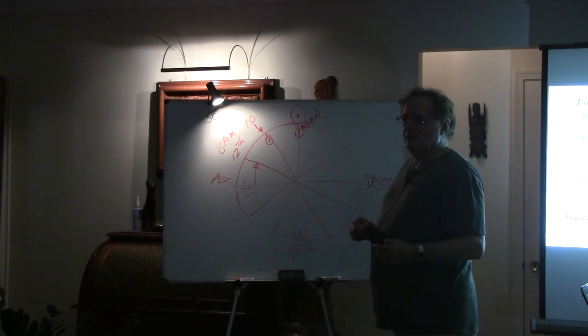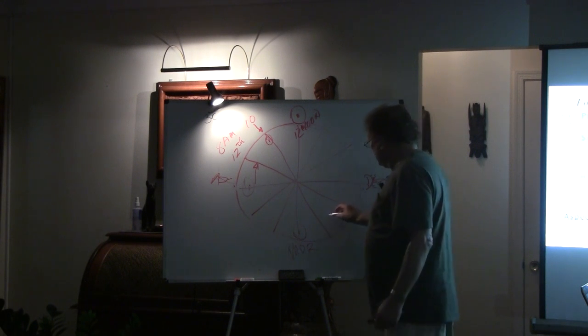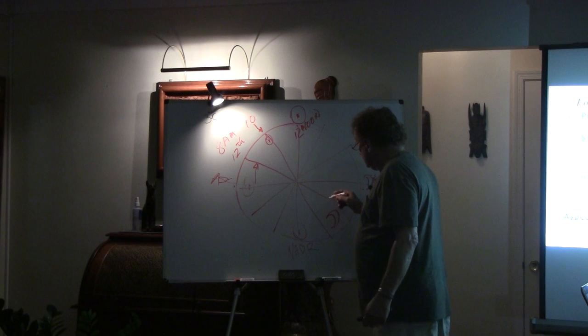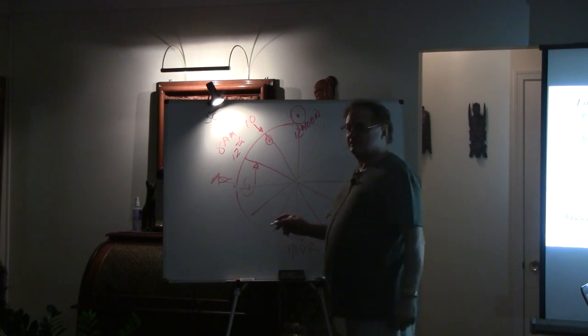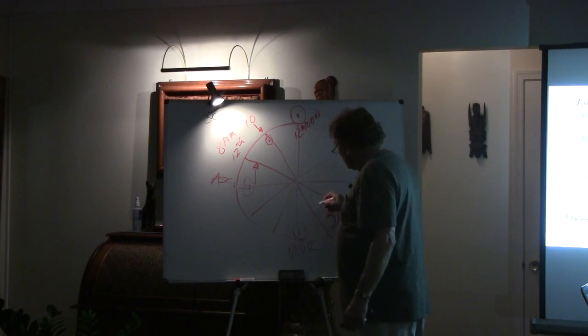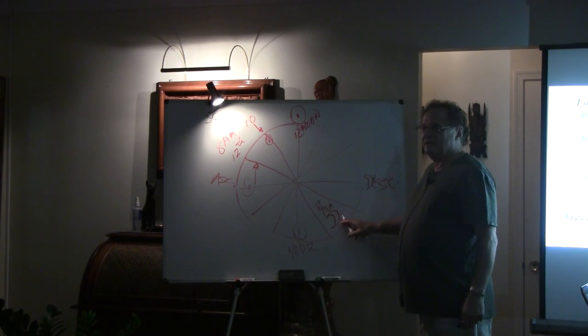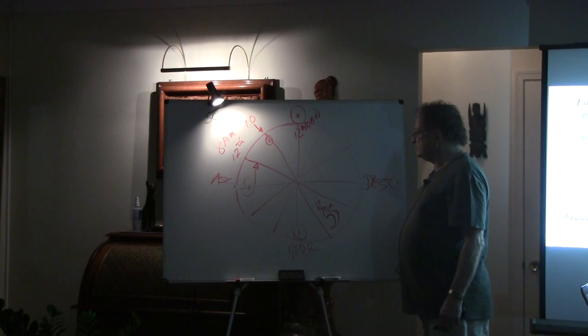Is it in Scorpio? Okay. So the moon is down here. What degree? Is it 45? No, that's the minutes, 19. 19 degrees Scorpio. No, no, no. It's 6 degrees. Oh, it's 6 degrees, okay. 6 degrees Scorpio.